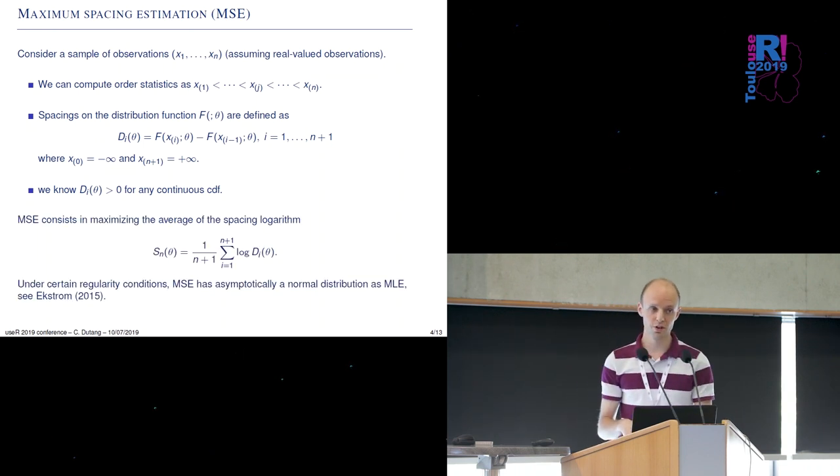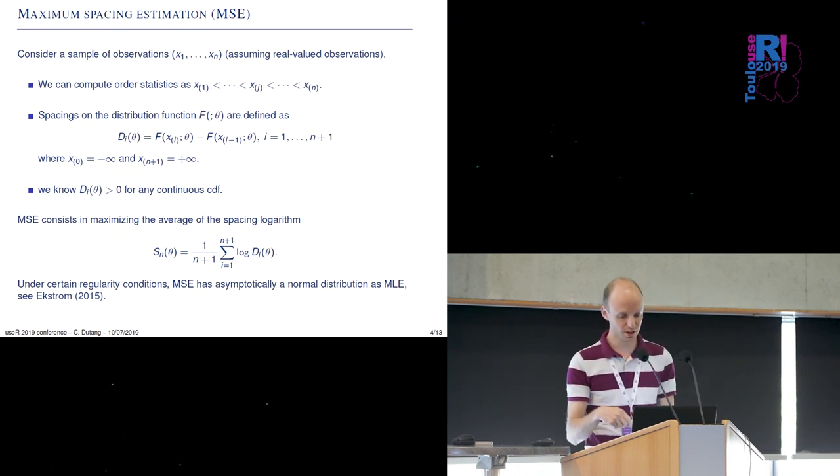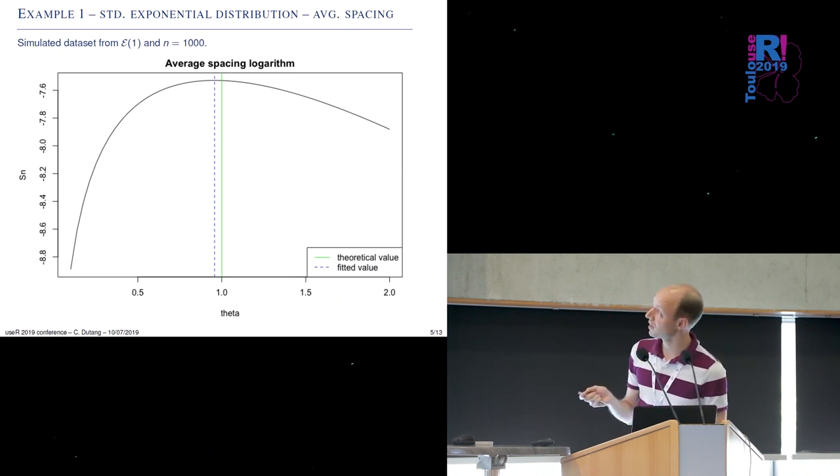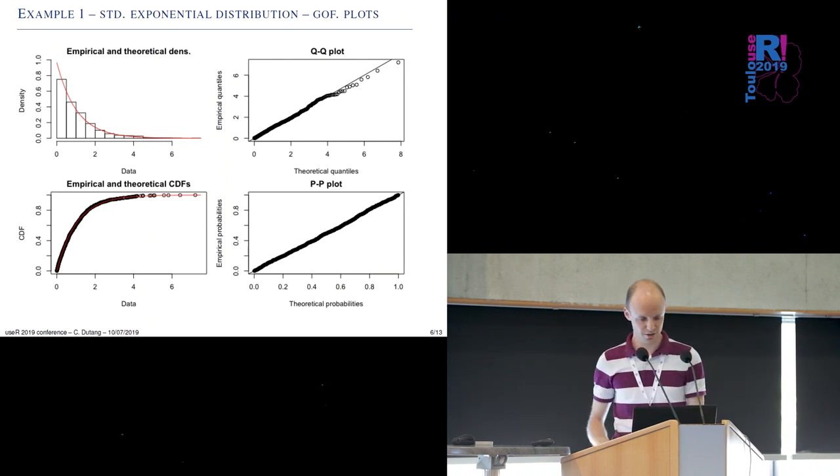And once you have the di then you take the log average of the spacing and you try to maximize it and under certain regularity condition you can show that the MSE has exactly the same property as maximum likelihood in sense it is unbiased and normally distributed. So if we take just a simulated example of exponential distribution with a parameter equal to one in black line we see the average spacing we see that optimum value is reached near the true value one and that the spacing is quite very smooth.